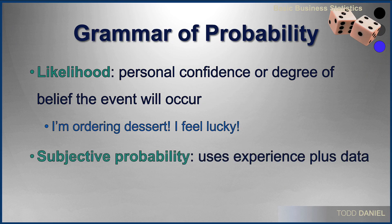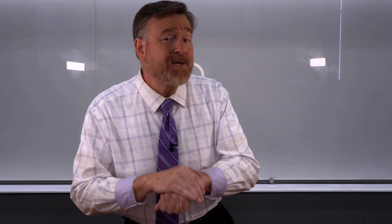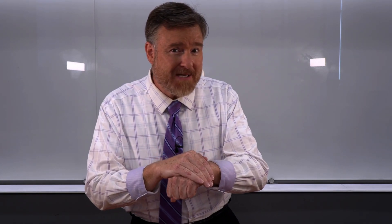Like, I'm feeling lucky, I'm gonna order dessert. And then there's also a subjective probability, which uses experience plus data. Like, what's the subjective probability that you'll be free for dinner on Friday? We would probably just say, what are the chances, or what is the likelihood? Or what is the subjective probability that you will want to participate in my experiment to see whether or not you have to pay?